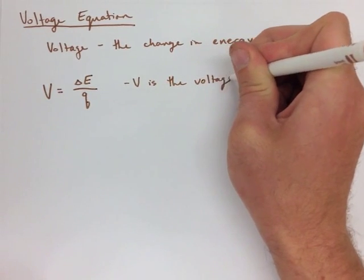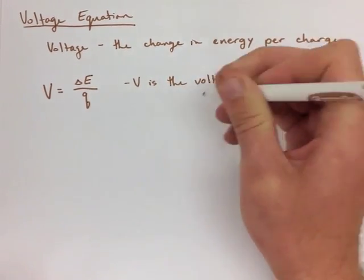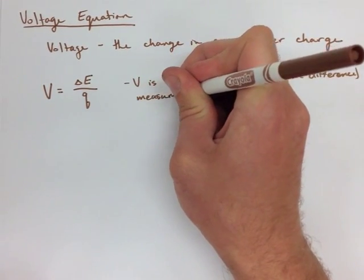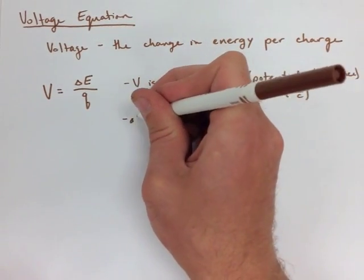So, delta E is the change in energy in joules, and Q is the charge in coulombs. Now, we can rearrange this equation in a couple of different ways. If you look at the bottom of your page, you'll notice that.